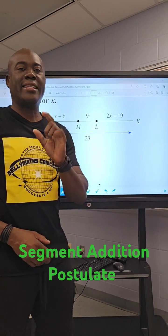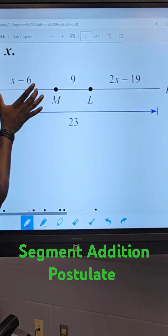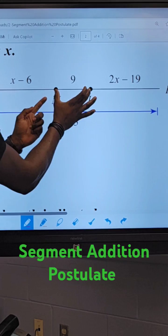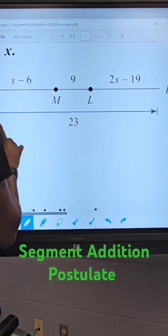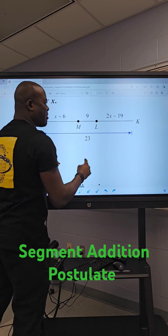In this video, we're looking at segment addition postulate. This segment is x minus 6, 9, and this segment here is 2x minus 19. It's all equal to 23.